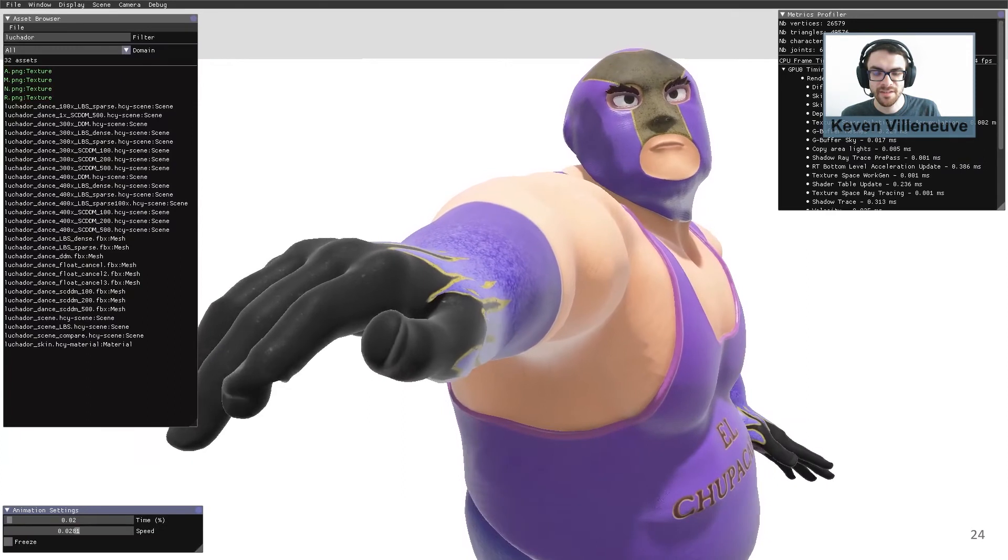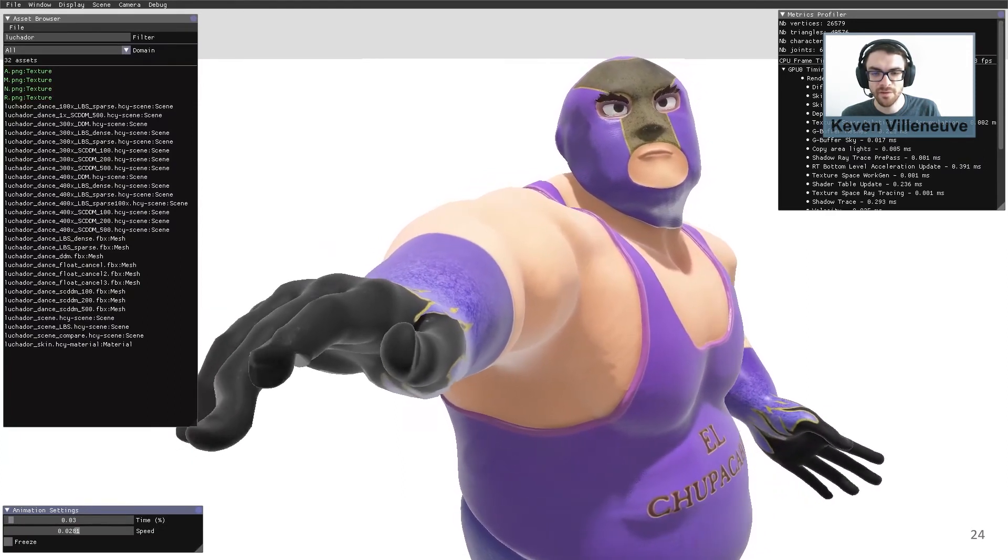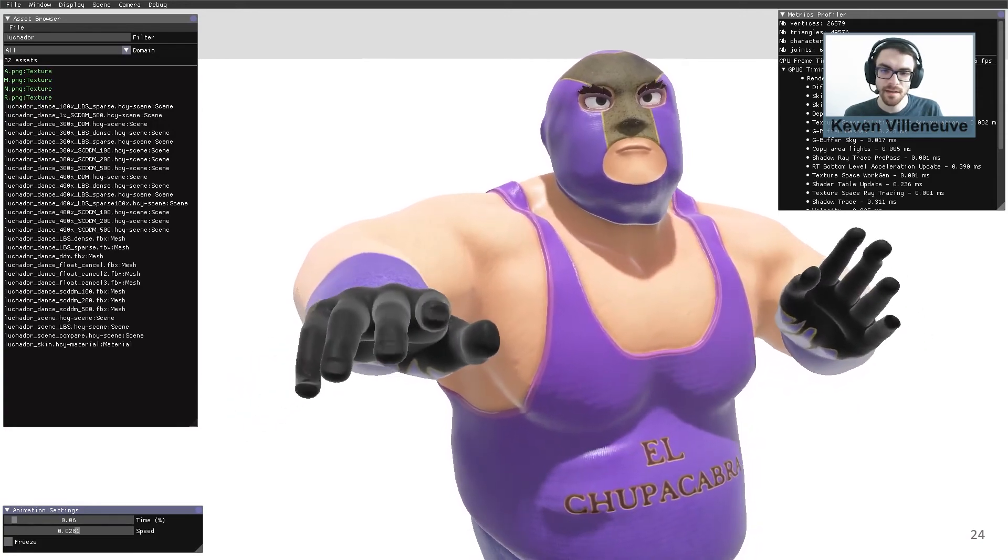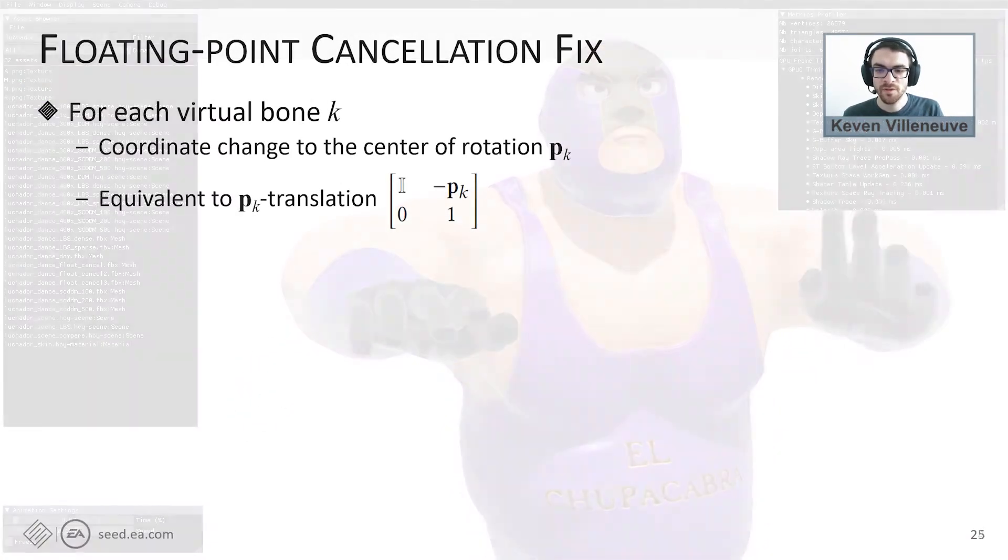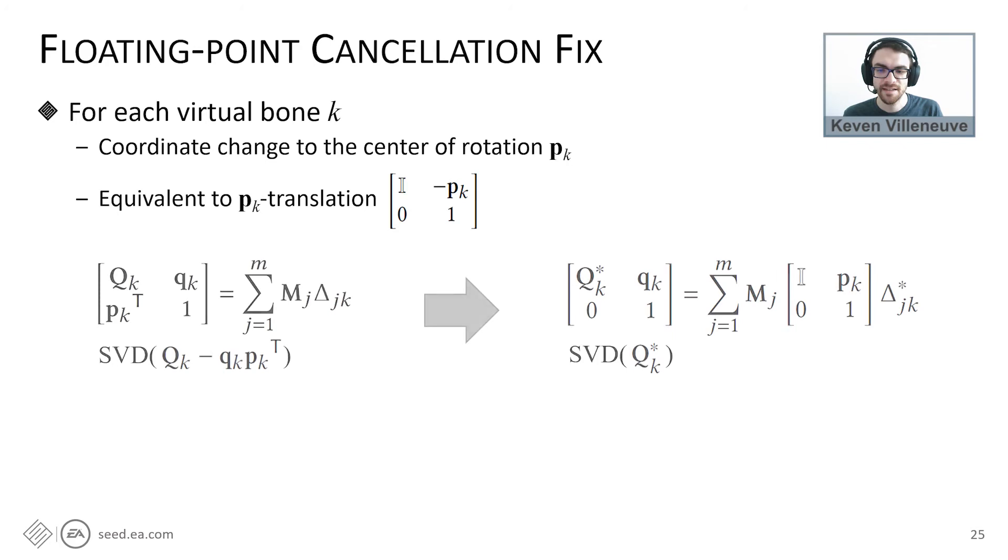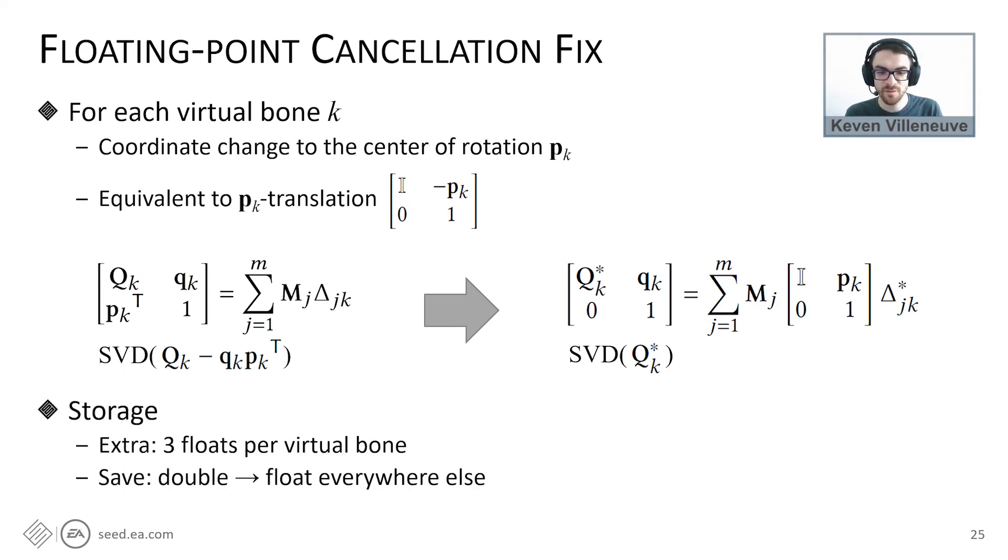This error is temporally unstable and produces undesirable flaking in the animation of characters such as this one. We propose to eliminate this issue by doing a coordinate change to the center of rotation or equivalently as a translation. The end result is that we are able to compute this 3x3 matrix directly instead of computing it as the difference of two matrices with potentially big values that could cause floating point cancellation error to occur. This solution only requires an additional 3 floats per virtual bone and does not change the computation time.